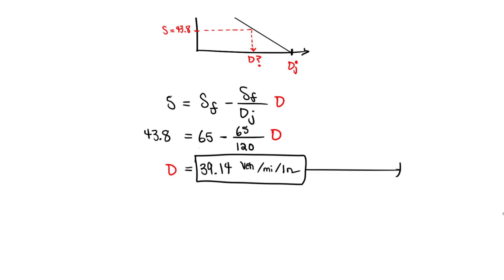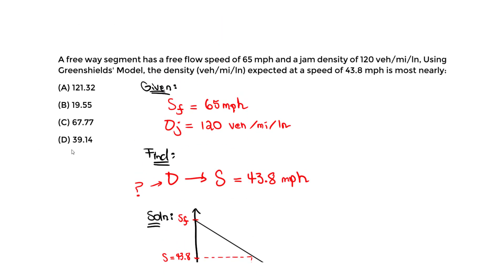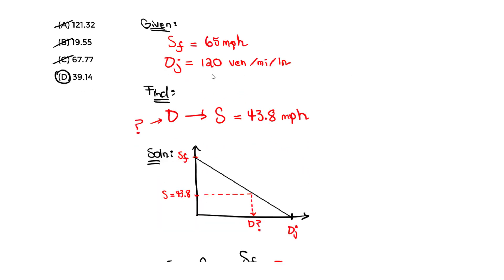That's the correct answer — approximately 39.14 vehicles per mile per lane, which corresponds to answer choice D. That's all for this video. Don't forget to subscribe and like, and let me know if you have any questions.